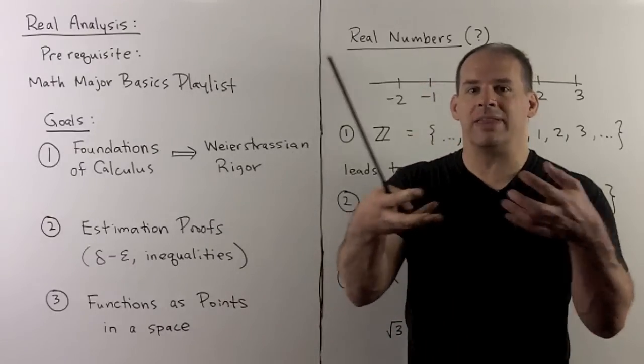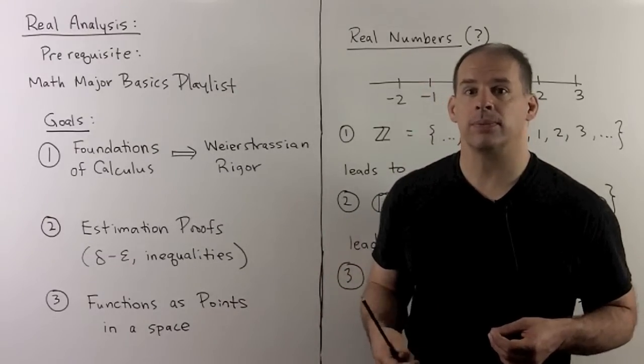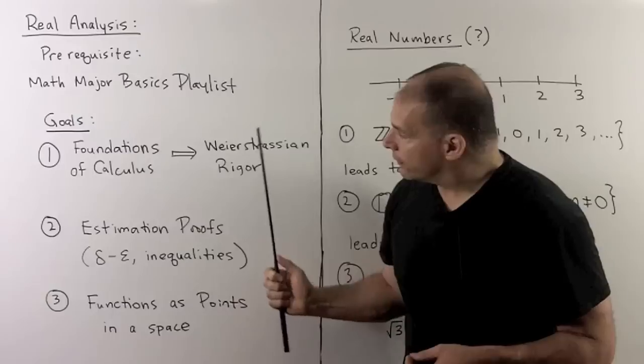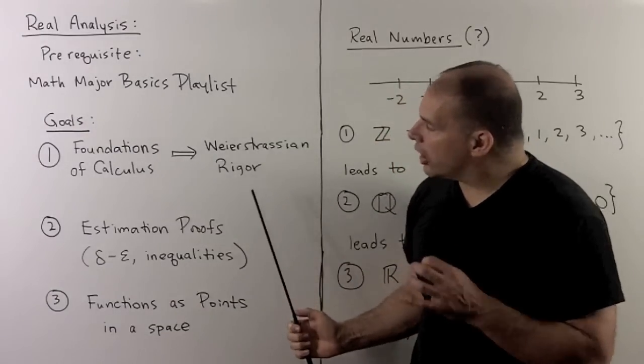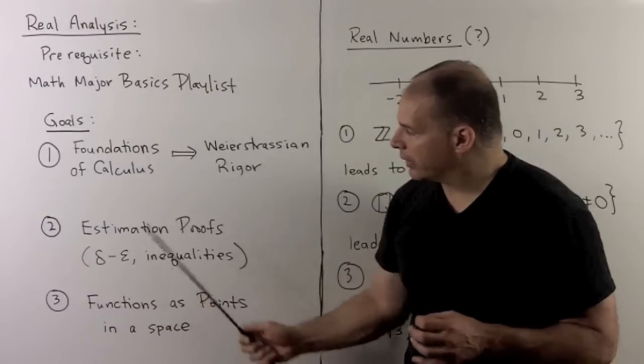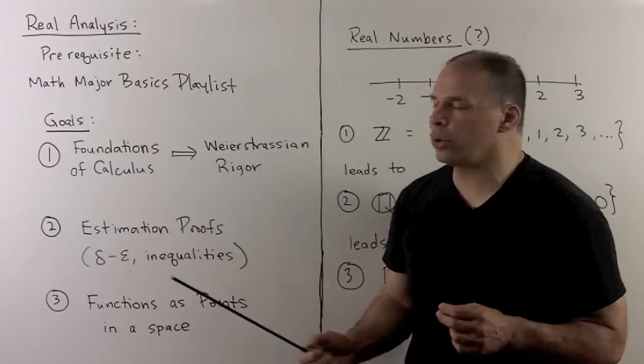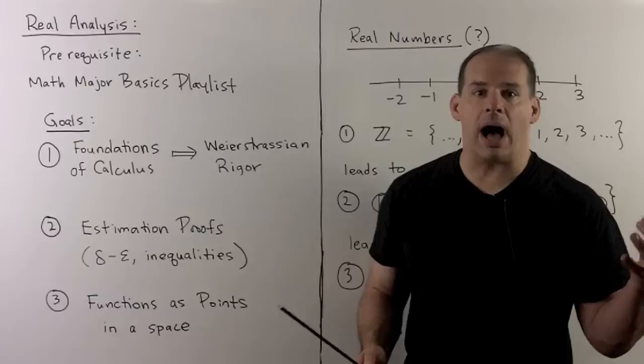Okay, so that's proving things all the way down to the foundations. Now, for this, we need to learn how to do estimation proofs. Okay, so you may have heard of delta-epsilon proofs. These typically involve a lot of inequalities.